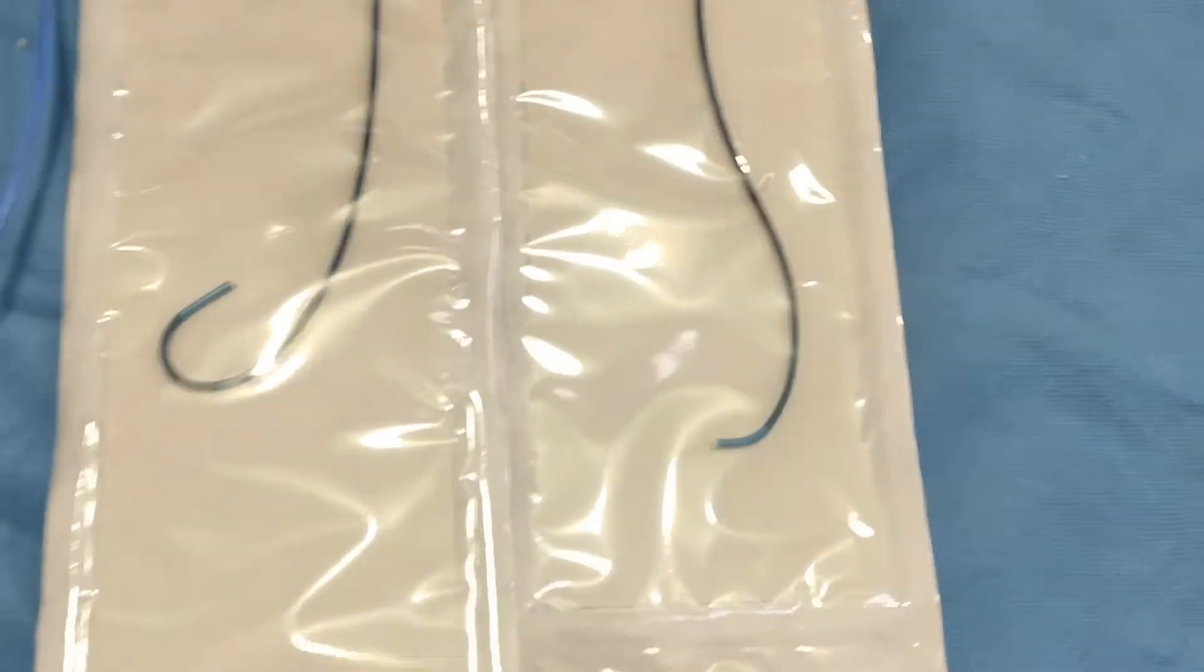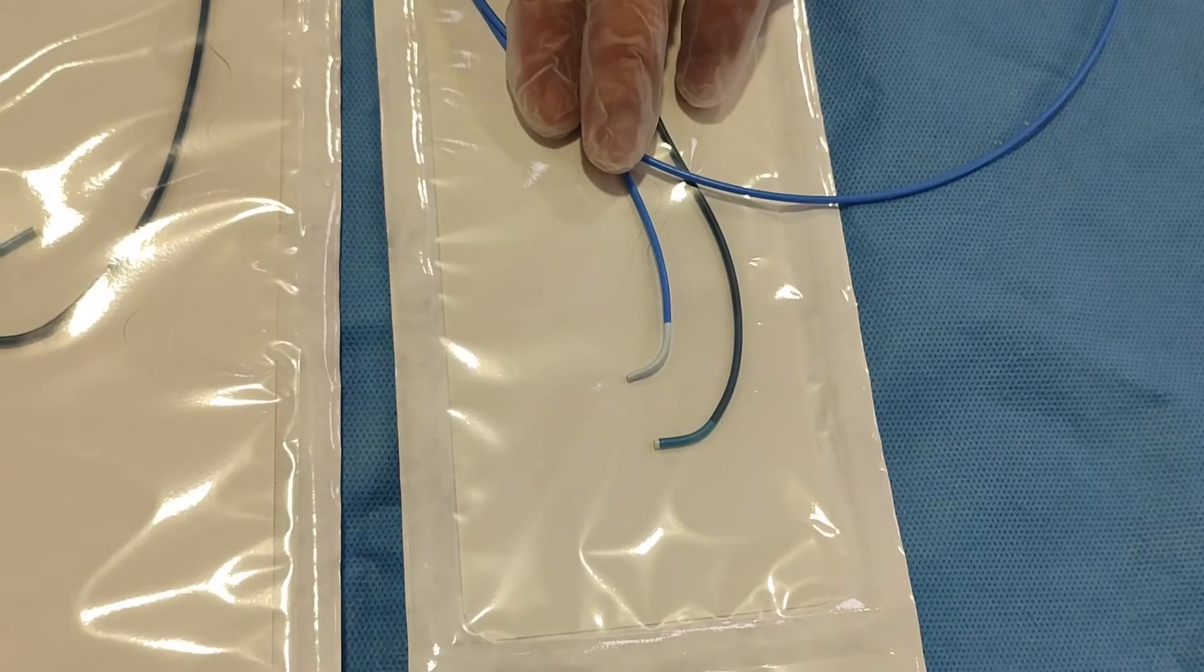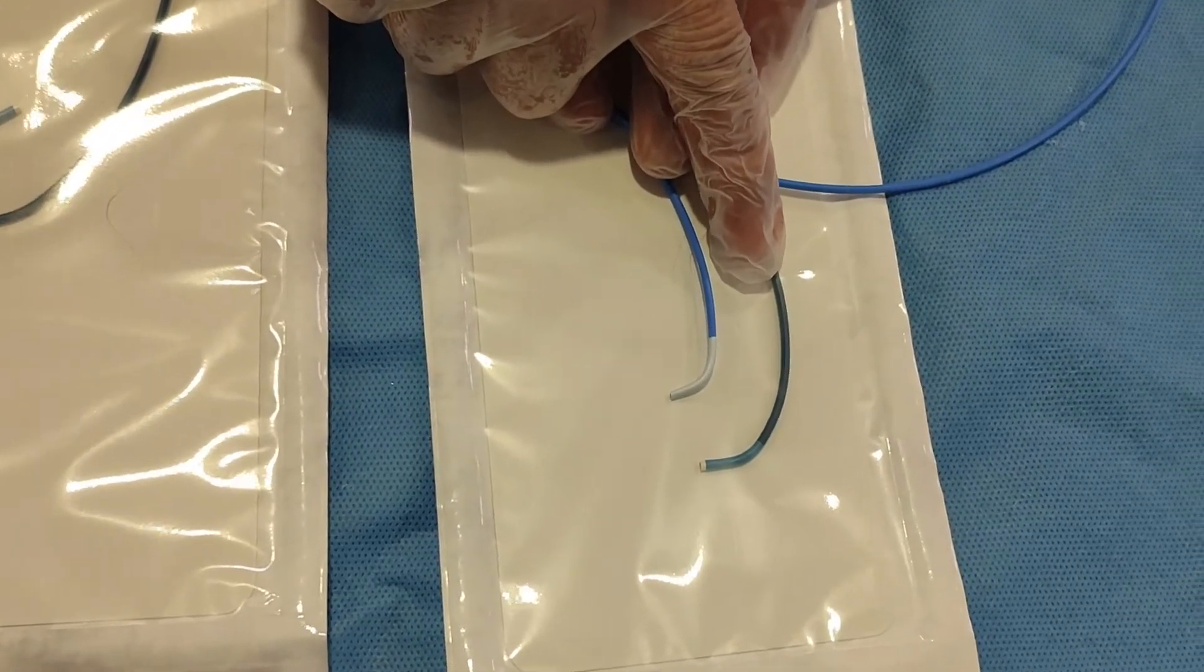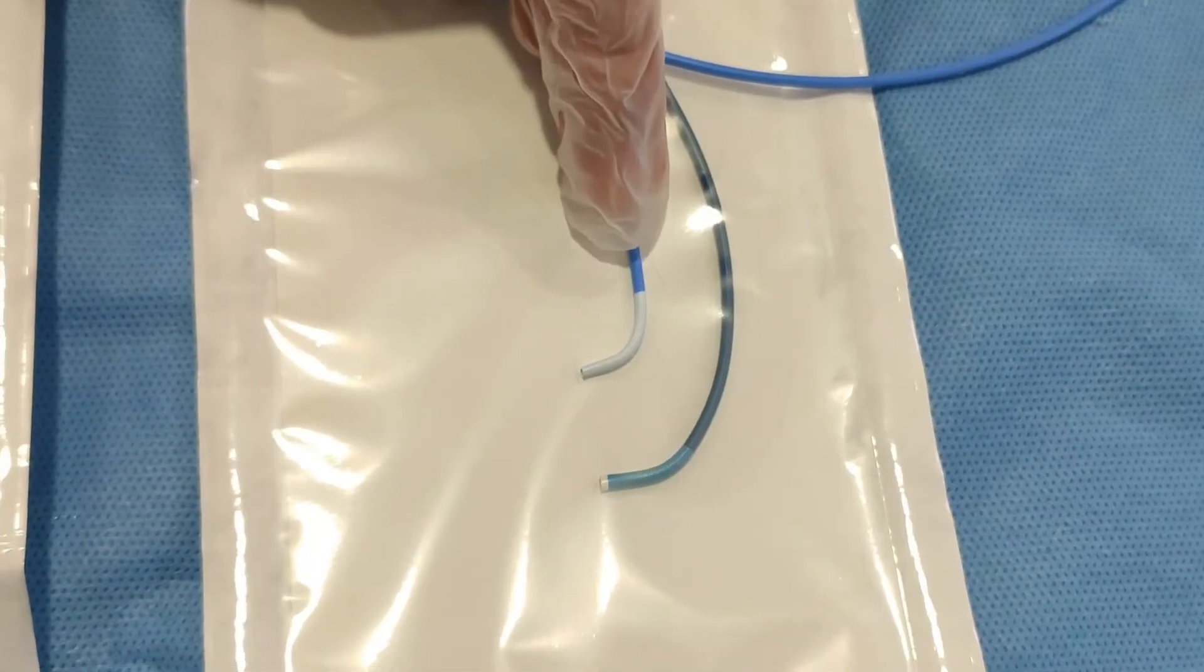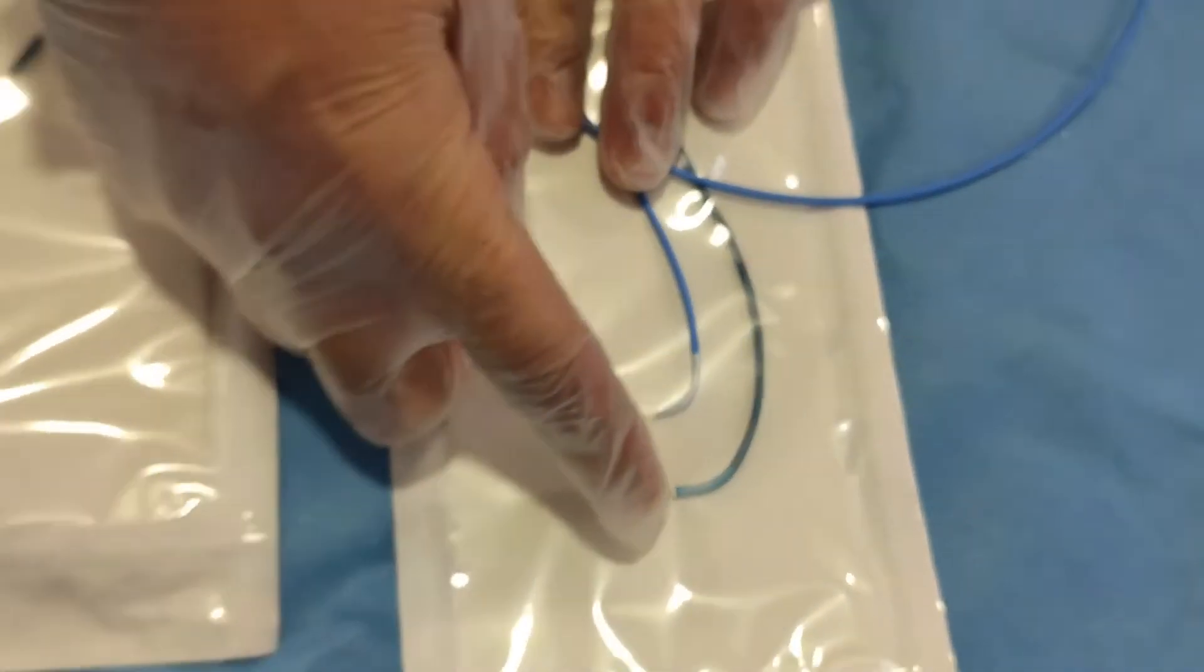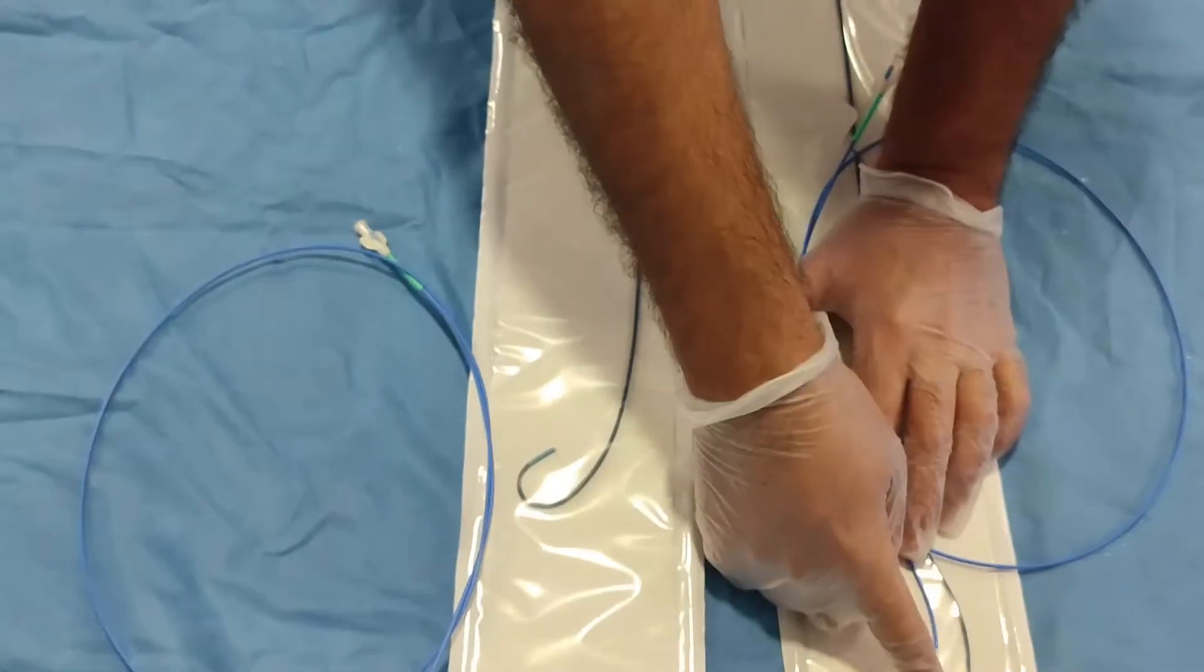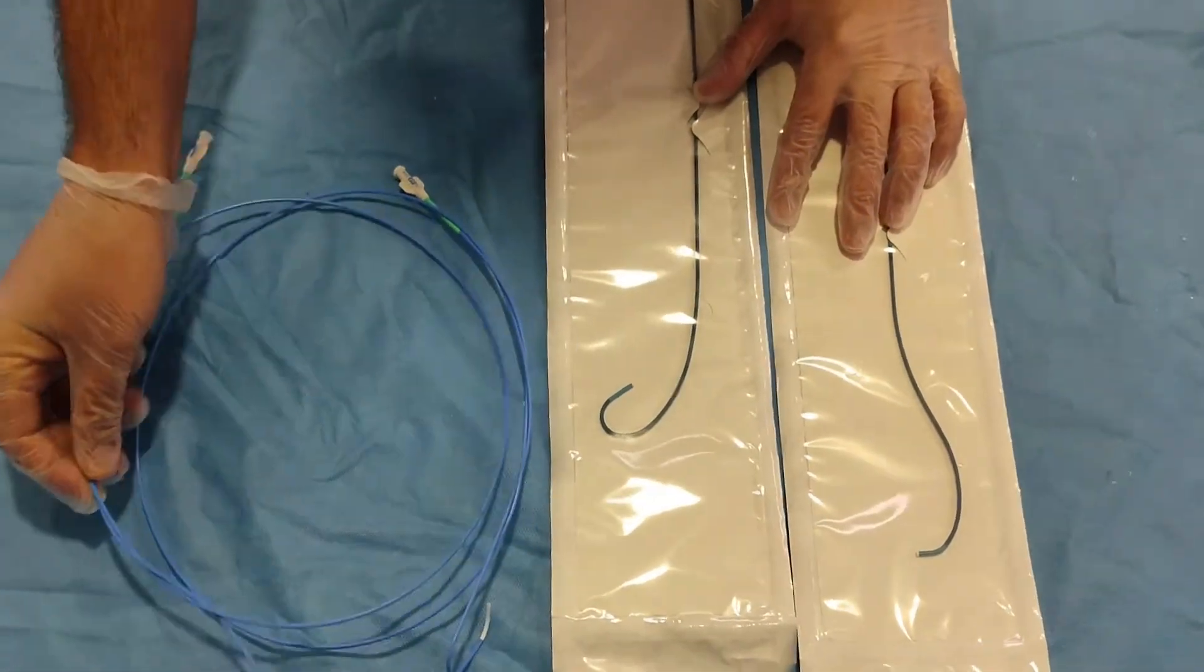The difference between this guiding catheter and this diagnostic catheter is of course the internal lumen. This is a guiding catheter you can use for intervention purposes. This is a 6 French guiding catheter. This is a 5 French diagnostic catheter. The internal lumen for this catheter is bigger than the diagnostic catheter lumen itself. So this catheter is used for interventional purpose and this diagnostic catheter is used only for diagnostic purposes.